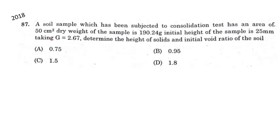A soil sample which has been subjected to a consolidation test has an area of 50 cm², a dry weight of 190.24 grams, and an initial height of 25 mm. Taking G (specific gravity) equal to 2.67, determine the height of solids and initial void ratio of the soil.